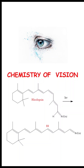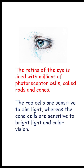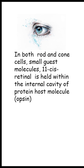The chemistry of vision: the retina of the eye is lined with millions of photoreceptors called rods and cones. The rod cells are sensitive to dim light, whereas the cone cells are sensitive to bright light and color vision. In both rods and cone cells, the small guest molecule 11-cis retinal is held within the internal cavity of the protein host molecule opsin.